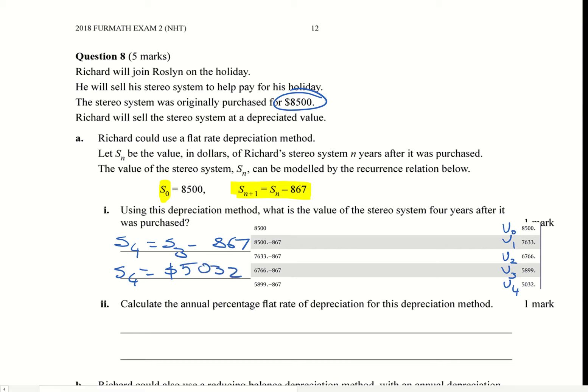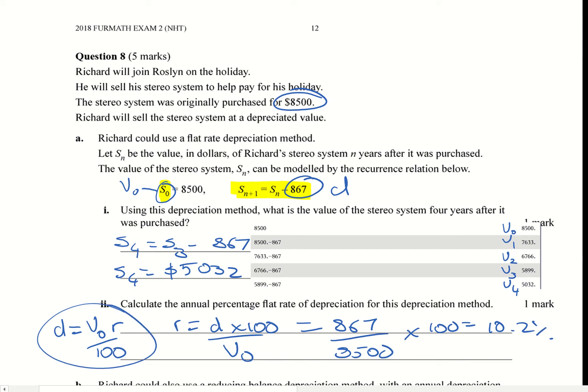Let's look at the second part of this question. It's asking to calculate the annual percentage flat rate of depreciation for this depreciation method. Now remember, this is D and this is your initial term. Your formula is D equals V0 times R over 100. We can rearrange that equation so we get it in terms of R, so R will equal D times 100 divided by V0. When you do that, you're going to get 867 divided by eight and a half thousand times that by a hundred, and you'll get an answer of 10.2 percent. Now, could you put this into your calculator and solve for R? Yes you could, and I'd suggest doing that because that's an easy way to do it.